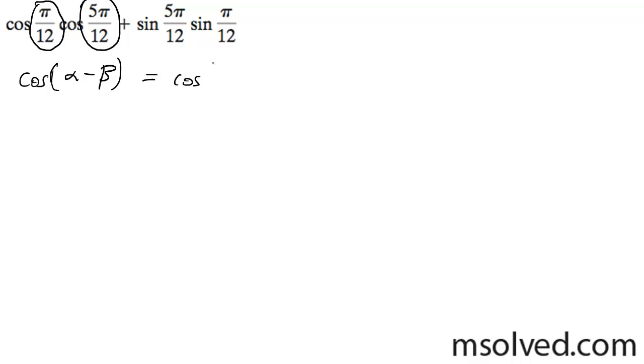So it's going to be equal to the cosine of pi over 12 minus 5pi over 12, which equals the cosine of negative 4pi over 12, which equals the cosine of negative pi over 3.